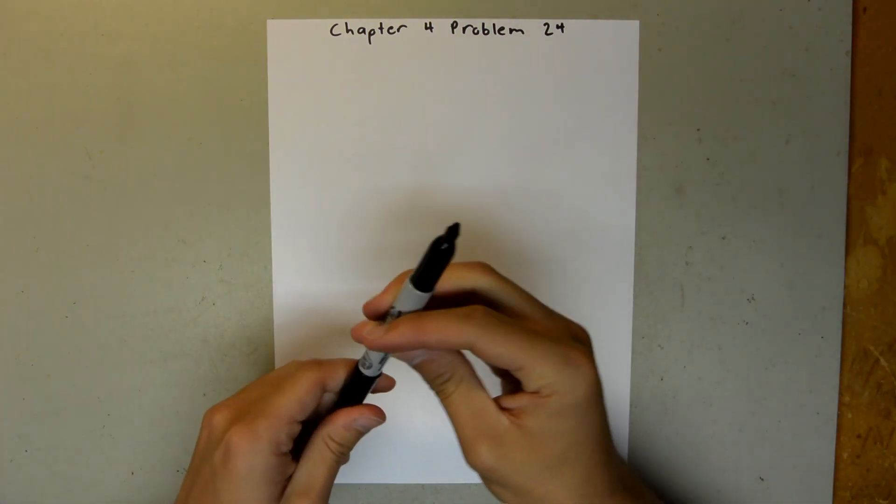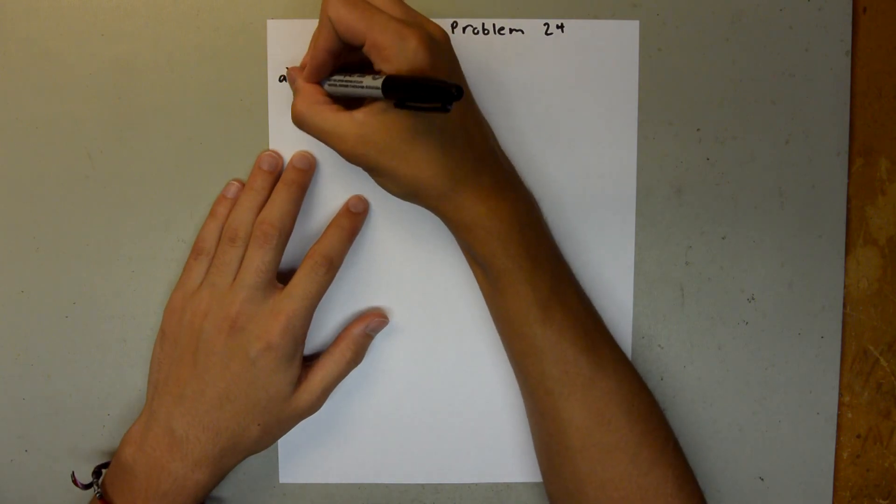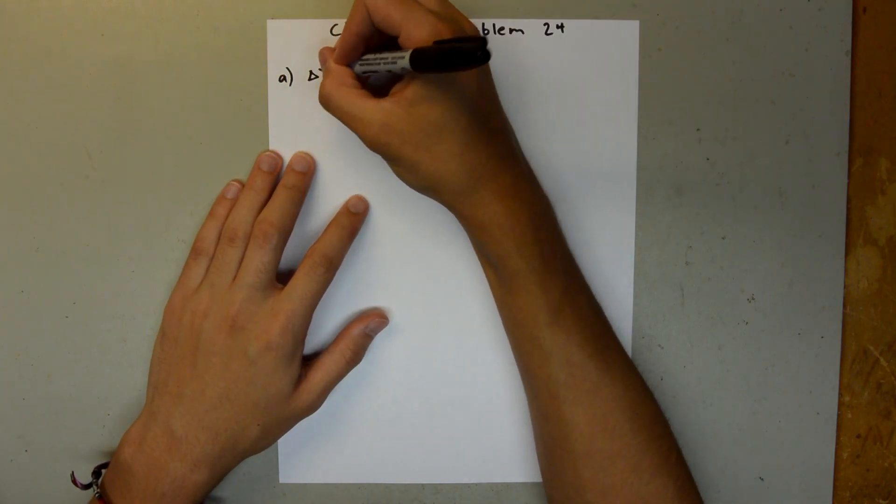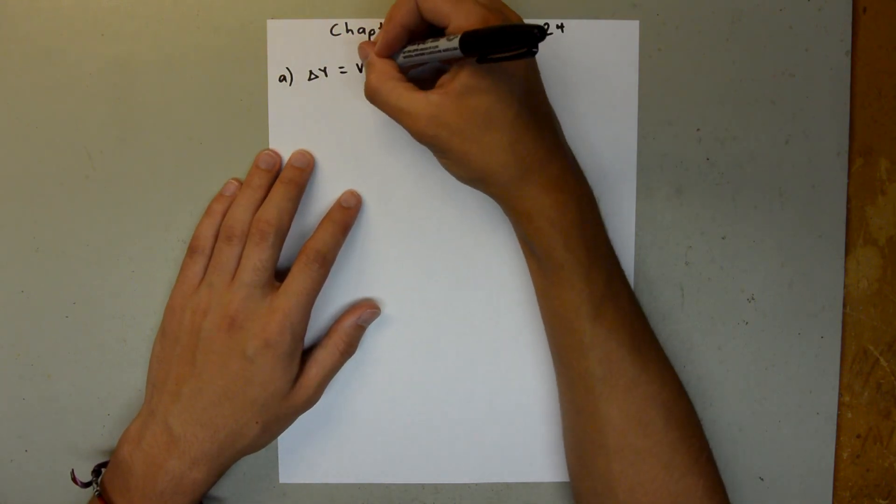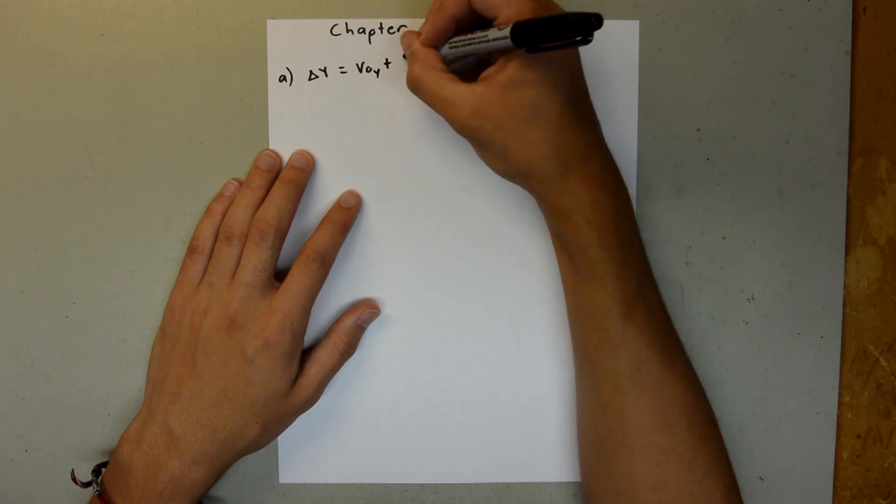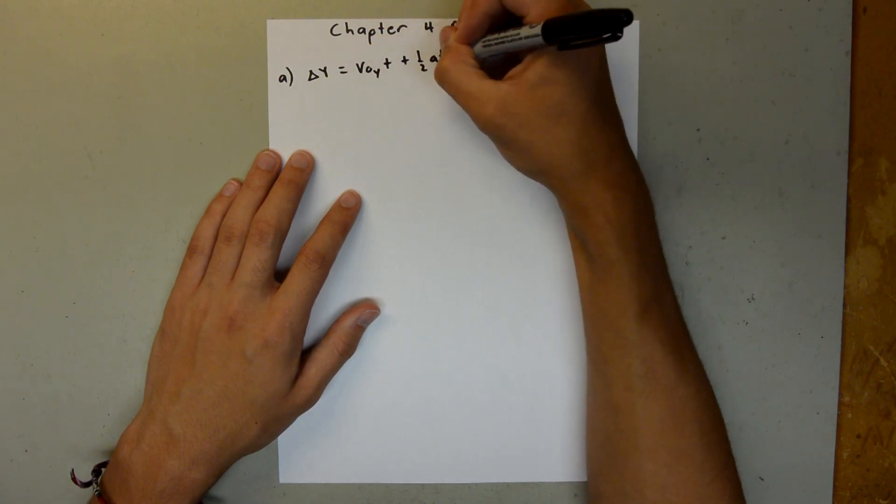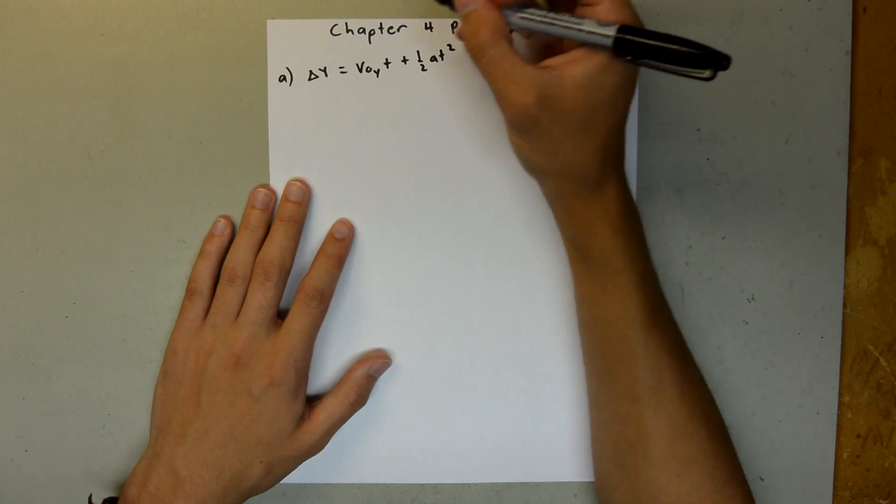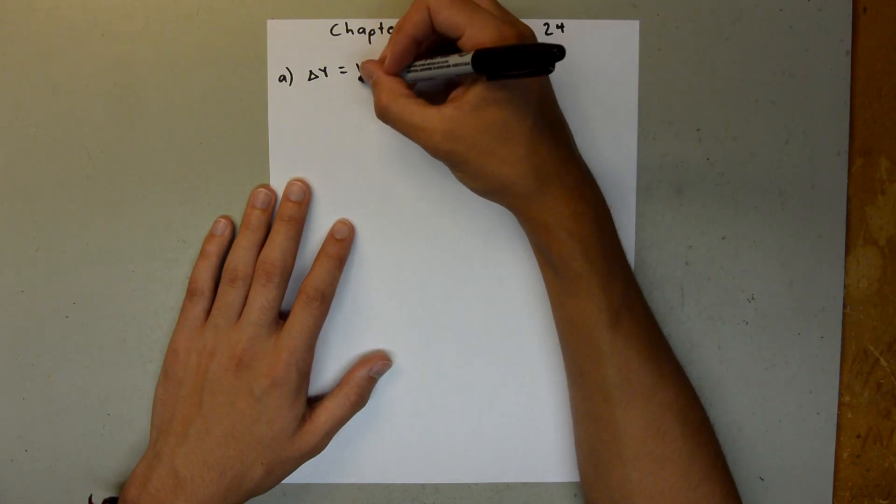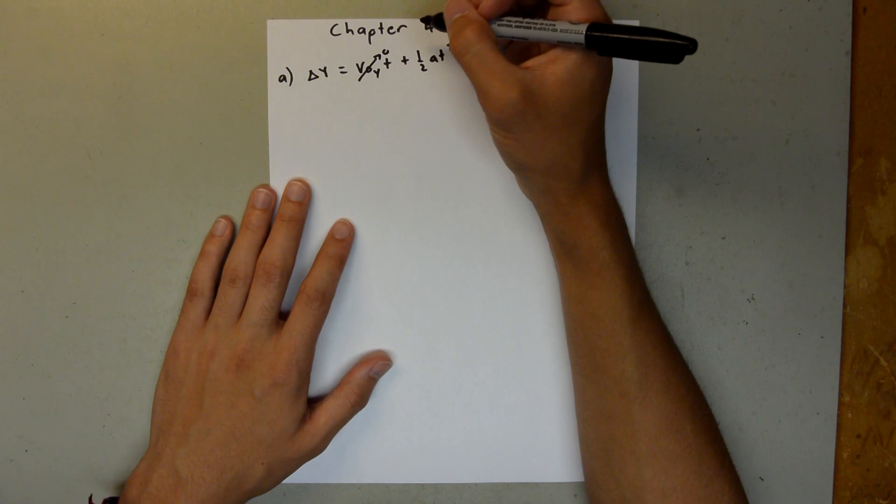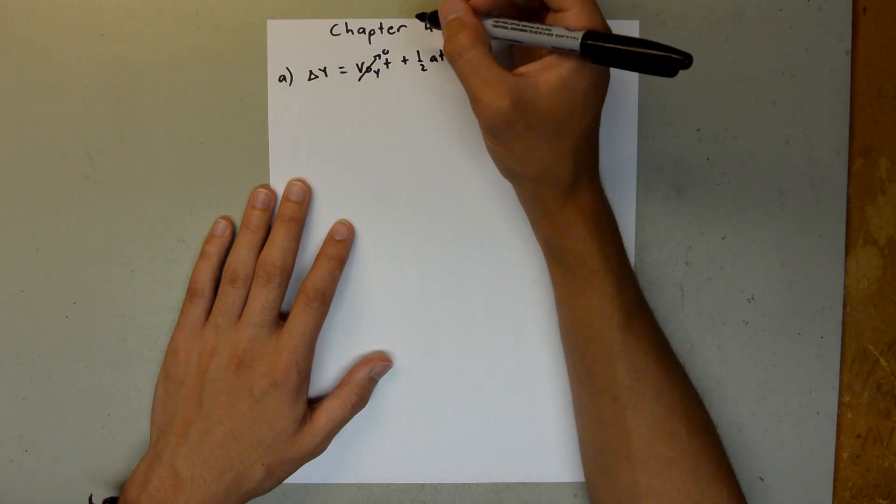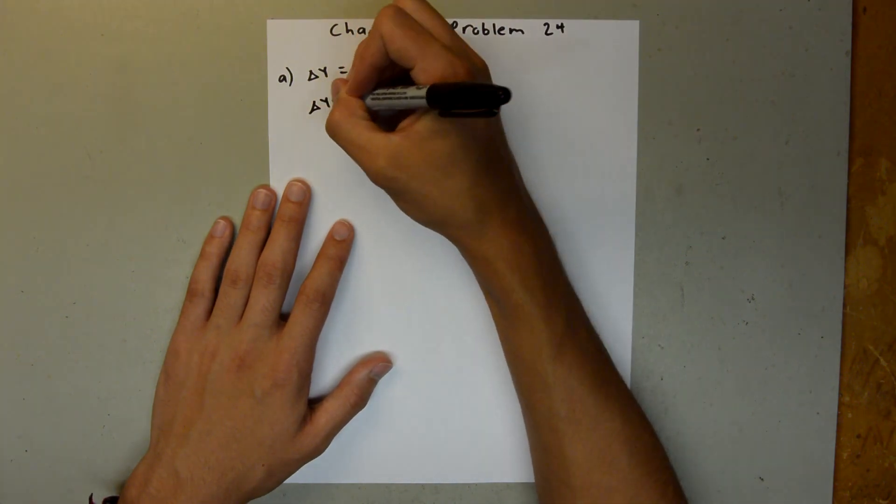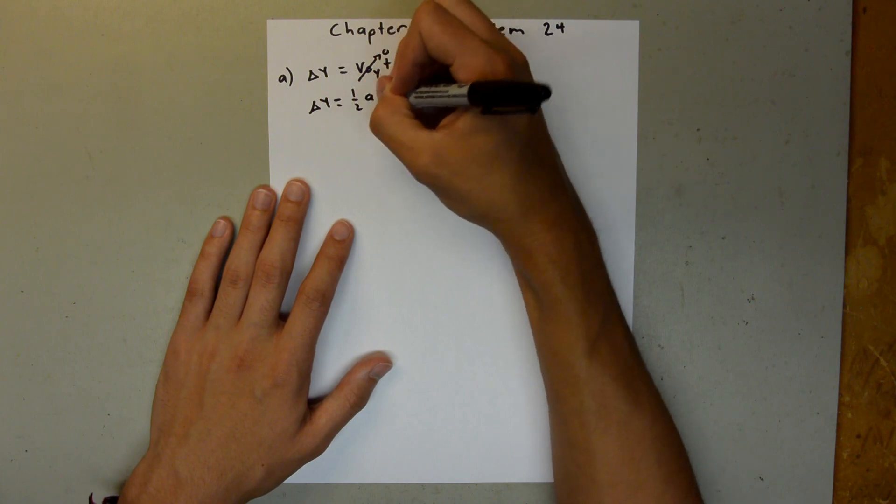So for part A, we can use delta y is equal to the initial velocity in the y times t plus 1 half at squared, and our initial velocity in the y direction is zero, since the ball is rolling off the table horizontally. So then our delta y is just going to be equal to 1 half at squared.